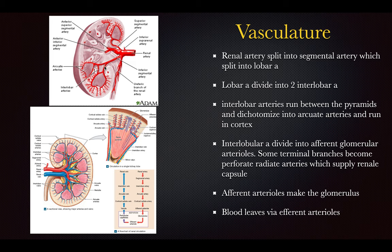The interlobular arteries divide into the afferent glomerular arterioles, and some branches perforate the radiate arteries to supply the renal capsule. The afferent arteries make the glomerulus, and blood leaves through the efferent arterioles. The radiate arteries from the arcuate arteries supply the glomerulus.